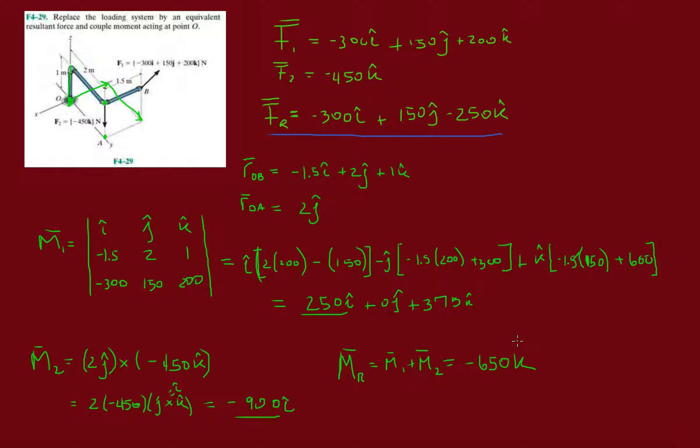Sorry, not k, it's in the i direction. Zero j, zero j, zero j. And then plus 375k.